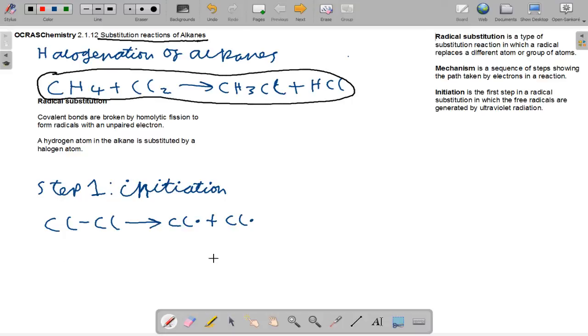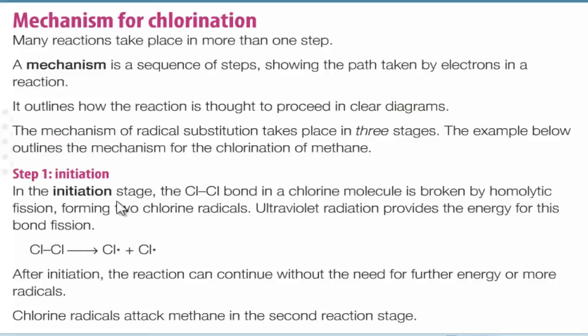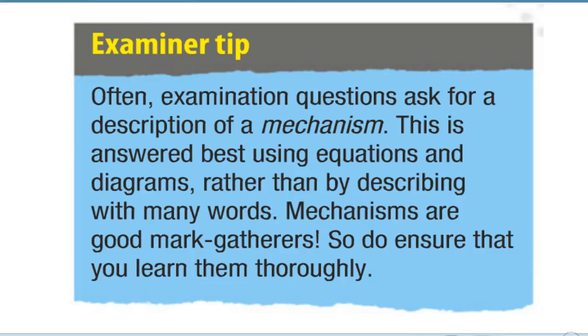Step one is the initiation step. Covalent bonds are broken by homolytic fission to form radicals with an unpaired electron. The halogens bromine and iodide also react with alkanes in a similar way. In the initiation stage, the Cl-Cl bond in a chlorine molecule is broken by homolytic fission, forming two chlorine radicals. Ultraviolet radiation provides the energy for the bond fission. After the initiation reaction, the reaction can continue without the need for further energy or more radicals. The chlorine radicals attack the methane in the second reaction stage.